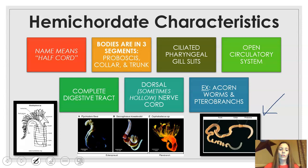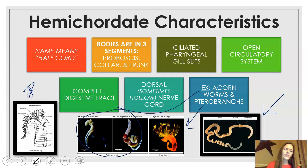Two major examples are acorn worms and pterobranchs. If you look down at the bottom, the pterobranch is pictured there, and there are two acorn worms shown here. This area gives you a bit more information about pterobranchs and their structure.